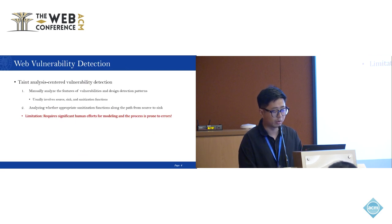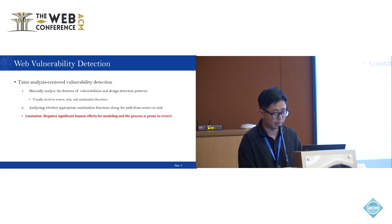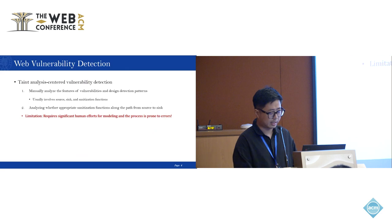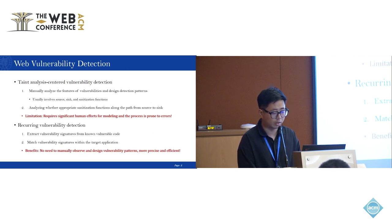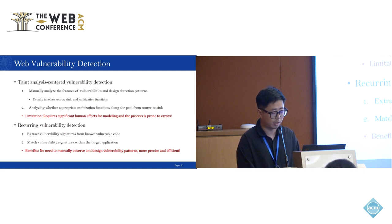Therefore, many static techniques have been proposed to detect such vulnerabilities. However, it's clear that the approach centered around taint analysis requires more human effort. This technique requires security experts to analyze vulnerability features and carefully design detection patterns for each type of vulnerability. This process is error-prone and may cause false positives. In contrast, recurring vulnerability detection only needs to extract signatures from known vulnerabilities and then match these signatures in the target application, with no need for manual design of detection patterns, making it more efficient and precise.